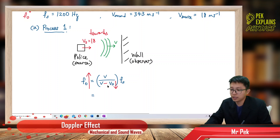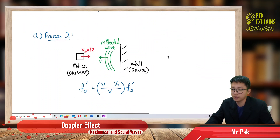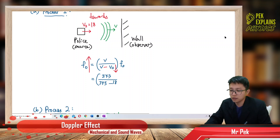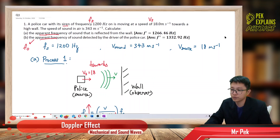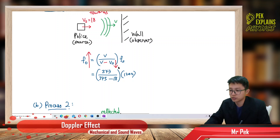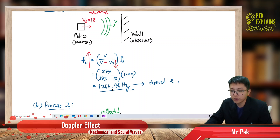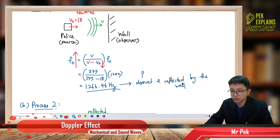So the formula gives 343 over (343 minus 18), times the actual frequency 1200 Hertz. This gives 1266.46 Hertz. This is the frequency observed and reflected by the wall.